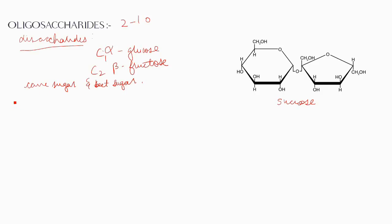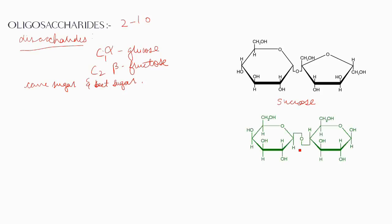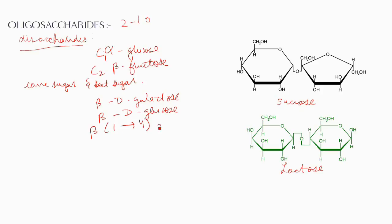Another example of a disaccharide is lactose, composed of beta-D-galactose and beta-D-glucose held together by beta-1,4 glycosidic bonds. Lactose occurs as milk sugar and is an exclusive carbohydrate source for breastfed infants. Lactase deficiency, commonly called lactose intolerance, leads to diarrhea and flatulence.